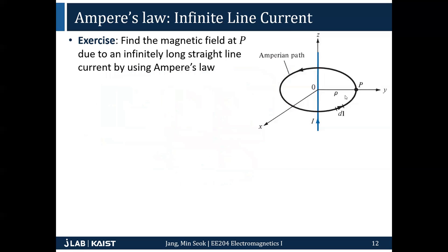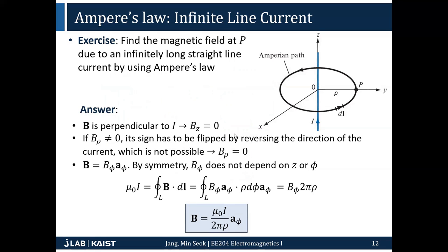For the infinite line current case, we ruled out B_z and B_rho, and B can only be along the phi direction, and B_phi can only depend on rho. So the only possibility is B_phi as a function of rho. By setting the Ampere's loop as a circle, we can determine that B_phi equals mu_0 * i / (2*pi*rho).